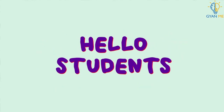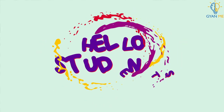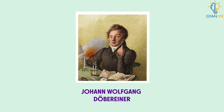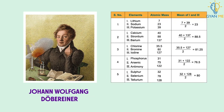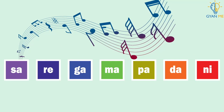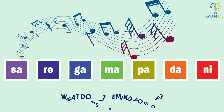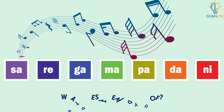Hello students! After the failure of Dobereiner's triads, another system of classification came into place. But before studying that, look at this image. What does it remind you of? It is the octave of music.